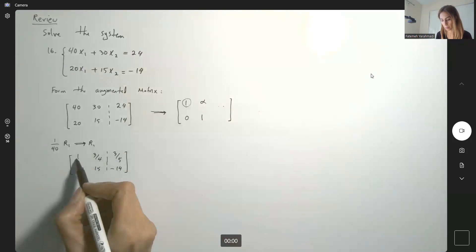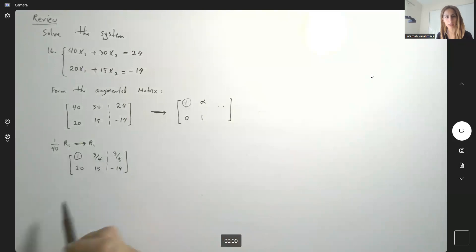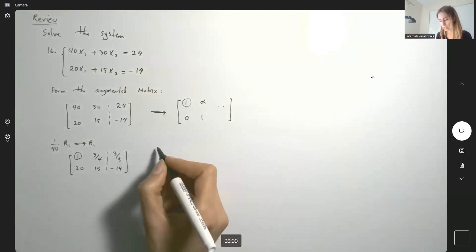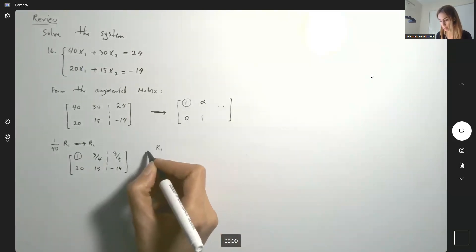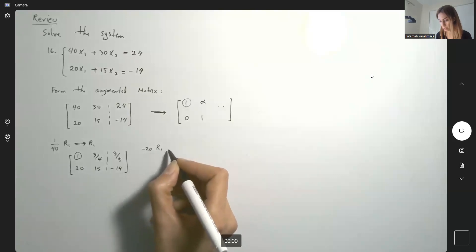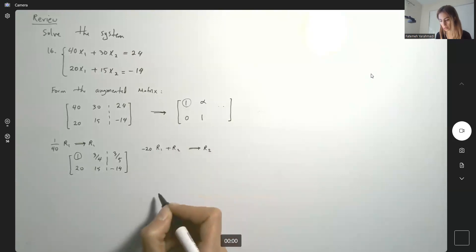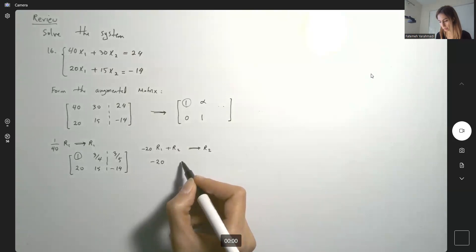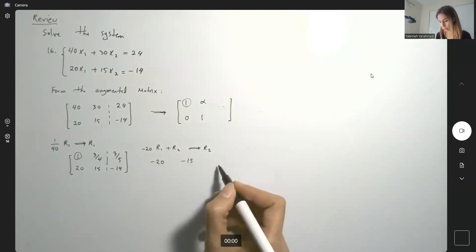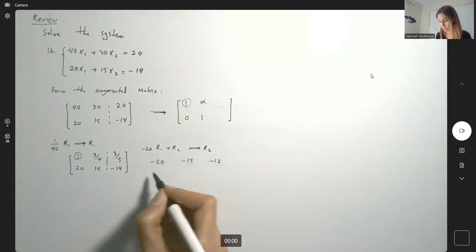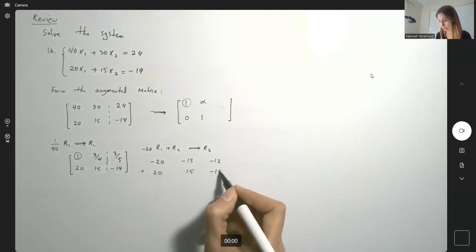We have 1 as the leading entry on the first row. So, now we're going to multiply the first row by negative 20 and add it to the second row. R1 is multiplied by negative 20 and add it to R2. And this is going to be your new R2. So, here you have negative 20 and you're going to have negative 15. And then, negative 12 will be added to 20, 15, and negative 14.